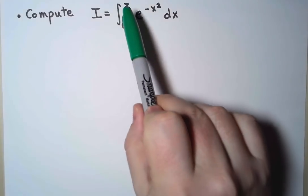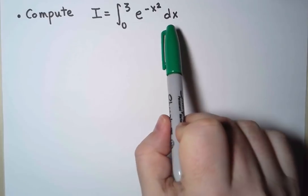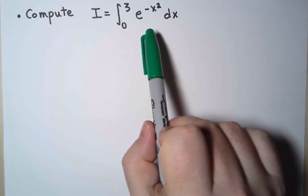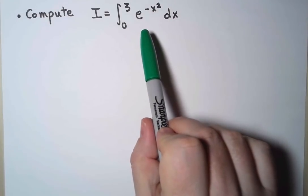I want to compute the integral from 0 to 3 of e to the minus x squared, with respect to x. e to the minus x squared, that's a simple enough function. But finding an antiderivative for it is pretty hard.